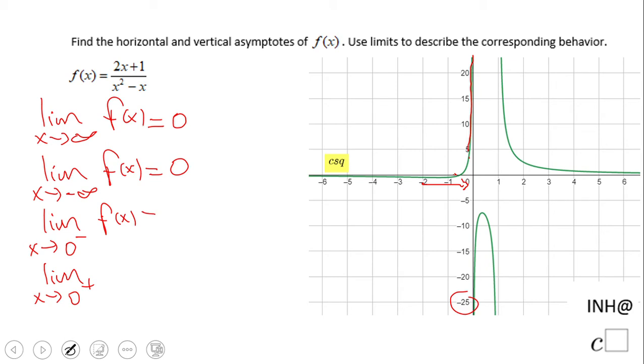That means positive infinity. But what happens when I approach from the right side? When I go here, you notice the graph is going down. It's negative infinity.